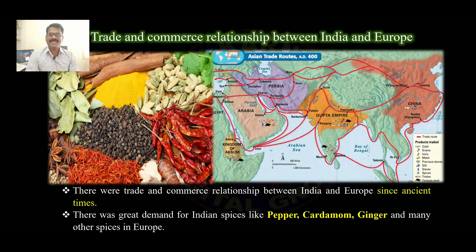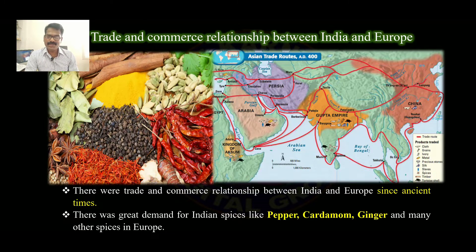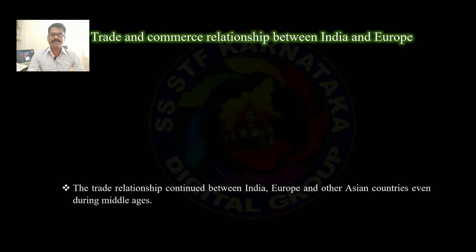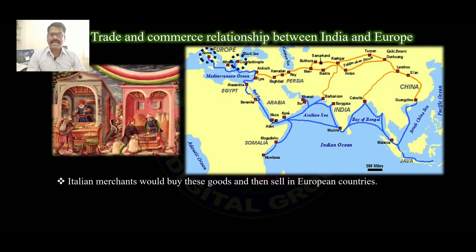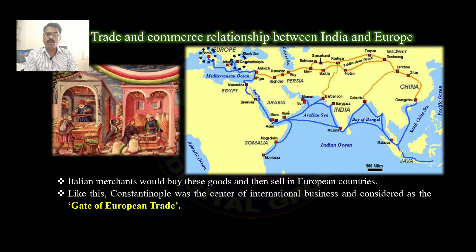There were trade and commerce relationships between India and Europe since ancient times. There was great demand for Indian spices like pepper, cardamom, ginger, and many other spices in Europe. The trade relationship continued between India and other Asian countries during the Middle Ages. Arab merchants carried Asian merchandise into Constantinople of the Eastern Roman Empire, which was under the control of the Byzantine Empire. Italian merchants would buy these goods and then sell them in European countries.